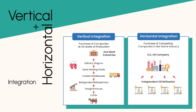Rockefeller's business practices had a profound impact on America's infrastructure. The availability of affordable oil led to the development of the automobile industry and the construction of new highways. The use of oil in industrial production also facilitated the growth of other industries, such as rubber and plastics.